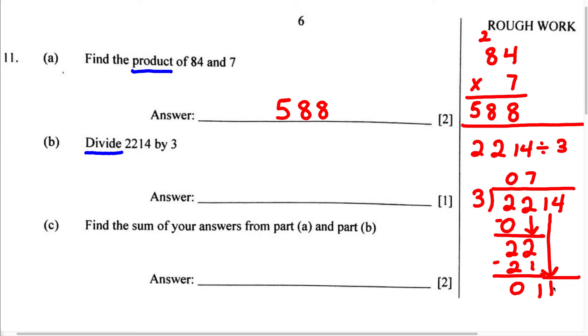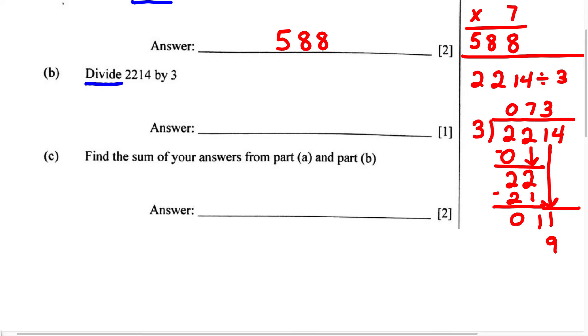3 can go into 11 three times. 3 times 3 is 9, and we subtract this. We know 11 minus 9 is going to give us 2. We're going to bring down the last digit, which is 4.